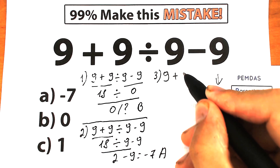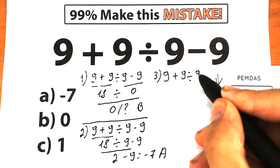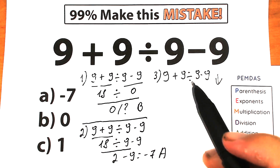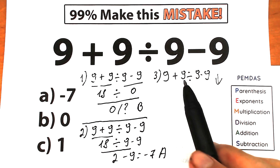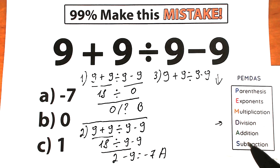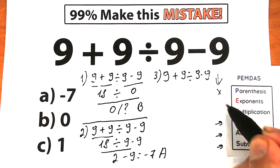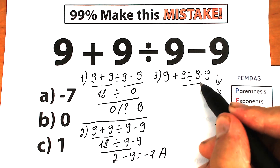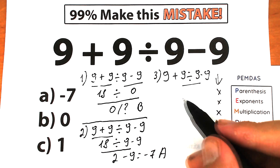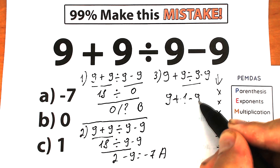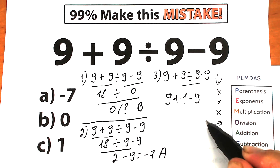So let's solve our challenge according to PEMDAS. We have 9 plus 9 divided by 9 minus 9. We have division, addition, and subtraction — no parentheses, no exponents, no multiplication. Division has the higher position and highest priority, so division is our first step: 9 divided by 9 which is equal to 1. Now we have 9 plus 1 minus 9. We complete our first step, the division part.